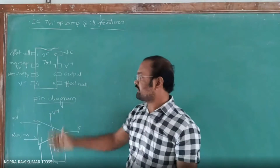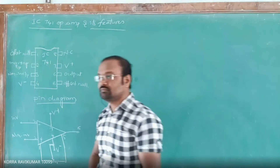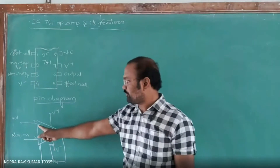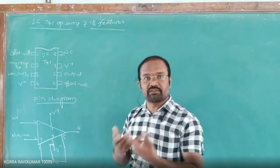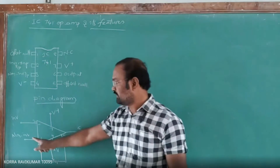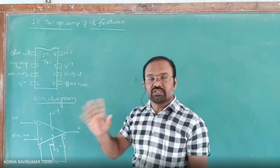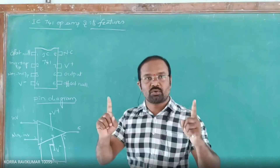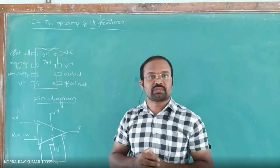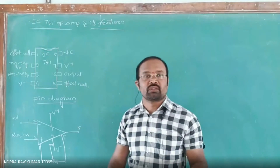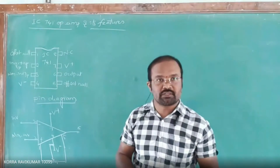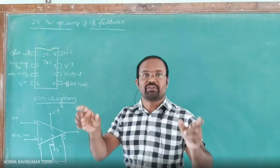This is the pin diagram of IC 741 op-amp. Observing the internal circuit, pin two is the inverting input where we apply the input, and pin three is the non-inverting input. The 741 op-amp has two inputs: the inverting input denoted with a negative sign, and the non-inverting input denoted with a positive sign.